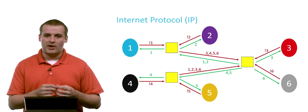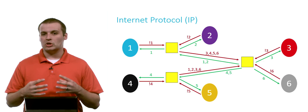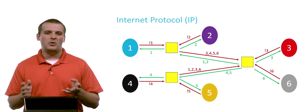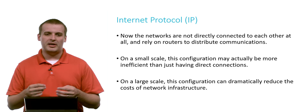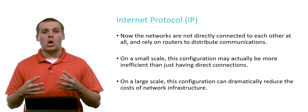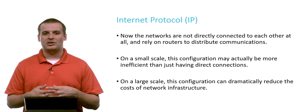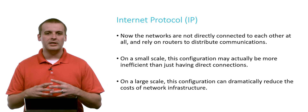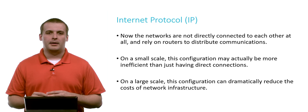There is a trade-off in speed — if one was directly connected to six, we wouldn't need to go through two routers. But maybe that trade-off is worth it if physically wiring all networks together is too expensive in dollars and cents. On a small scale this configuration might actually be more inefficient, but on a large scale we can scale the system much better. It really reduces the cost of network infrastructure to use intermediary routers to move traffic from point A to point B, as opposed to wiring everybody together.